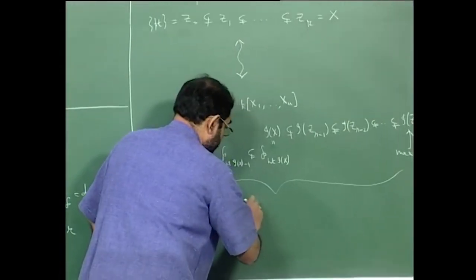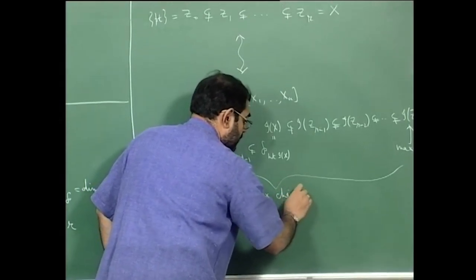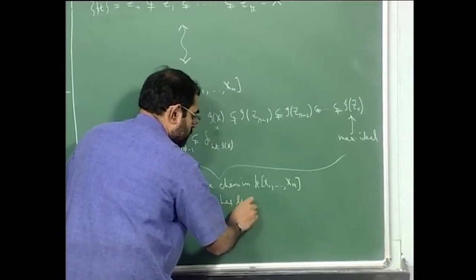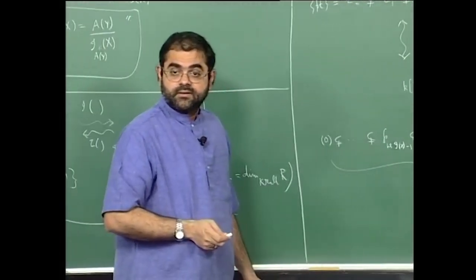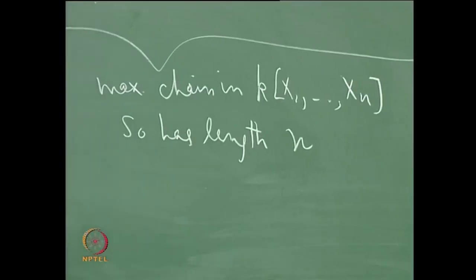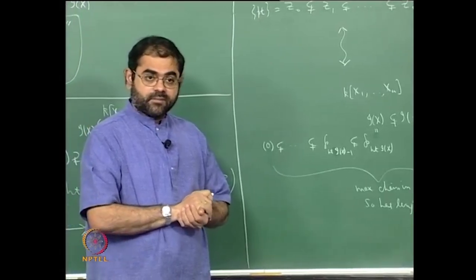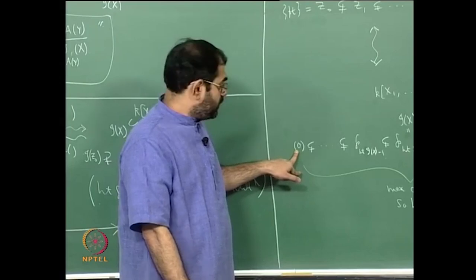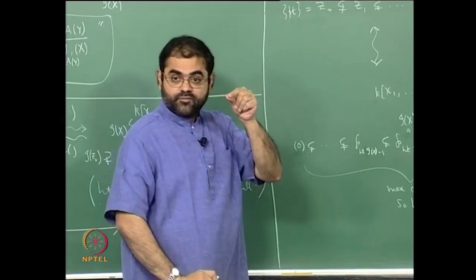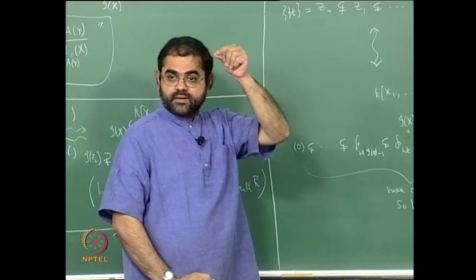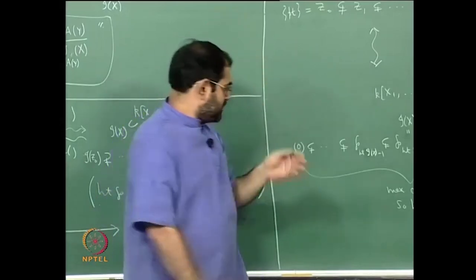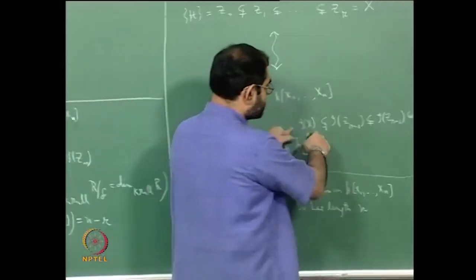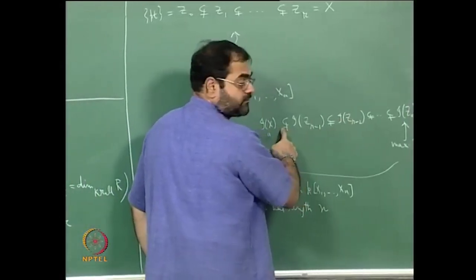The height of I(X) is found by starting with I(X) and taking a strictly decreasing chain of prime ideals. The maximal chain combining both parts will give the Krull dimension of the polynomial ring. Since z₀ is a point, the smallest ideal in the chain is 0 — because 0 is prime. These two chains together give the maximal chain, and the whole thing adds up to the Krull dimension of the polynomial ring, which equals n. Therefore, if dim(X) = r, then height(I(X)) = n − r.